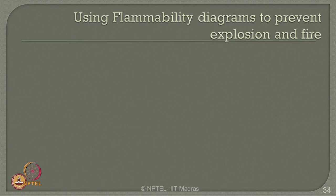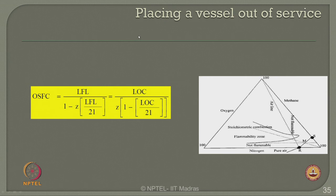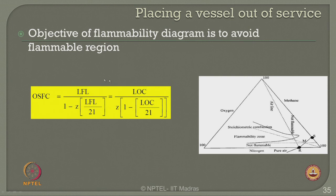One can also use flammability diagrams to prevent explosion and fire. The objective is to avoid the flammable region. The flammability diagram determines whether a flammable mixture exists and provides target concentration for inerting and purging. One can also use a technique called placing a vessel out of service. The flammability diagram has three arms: nitrogen, fuel, and oxygen, with values varying from 0 to 100 in an anti-clockwise manner. The diagram shown is for methane as the fuel, and the flammable region is plotted depending on the LOC, LFL, and UFL of the fuel arm.